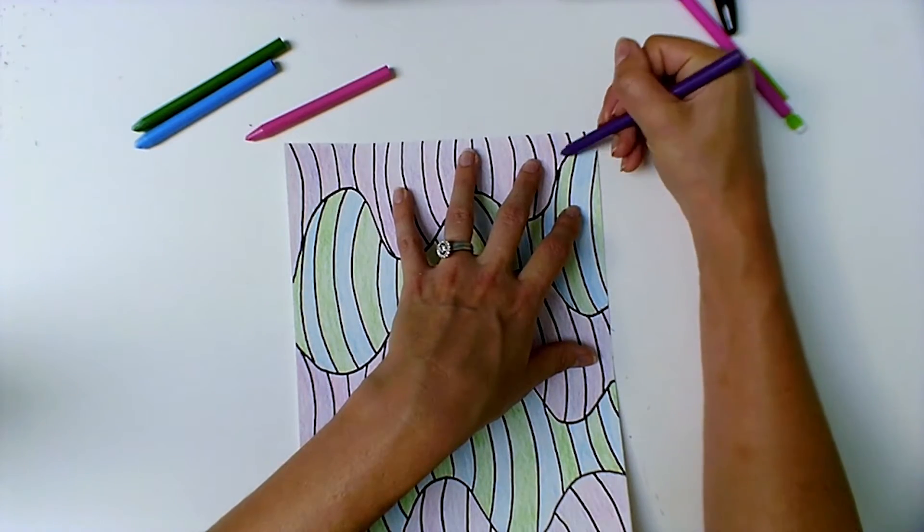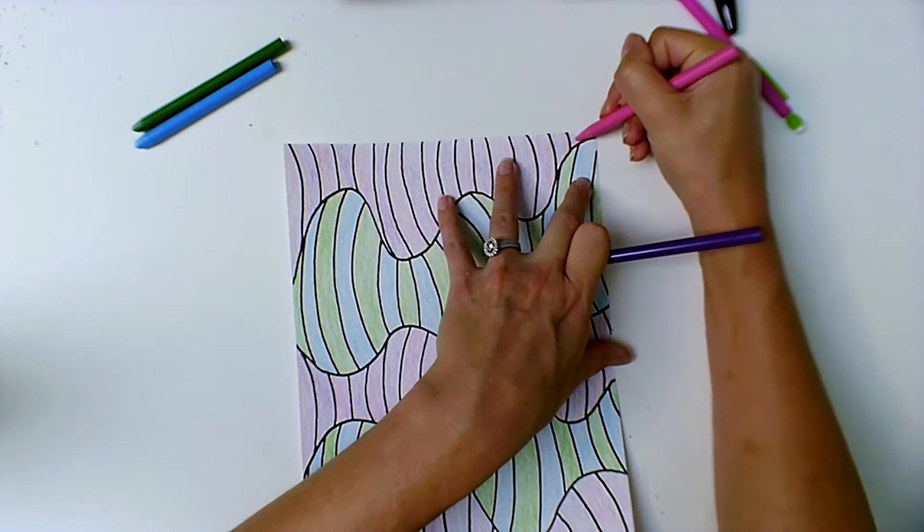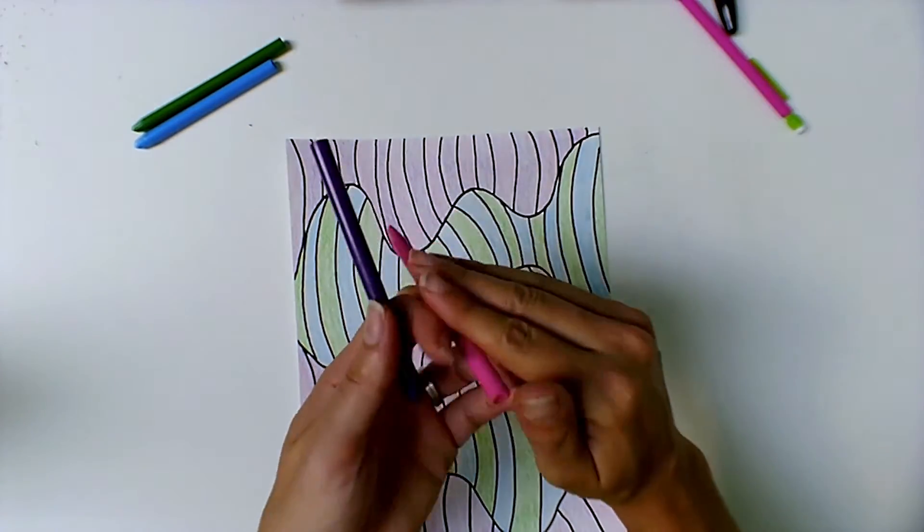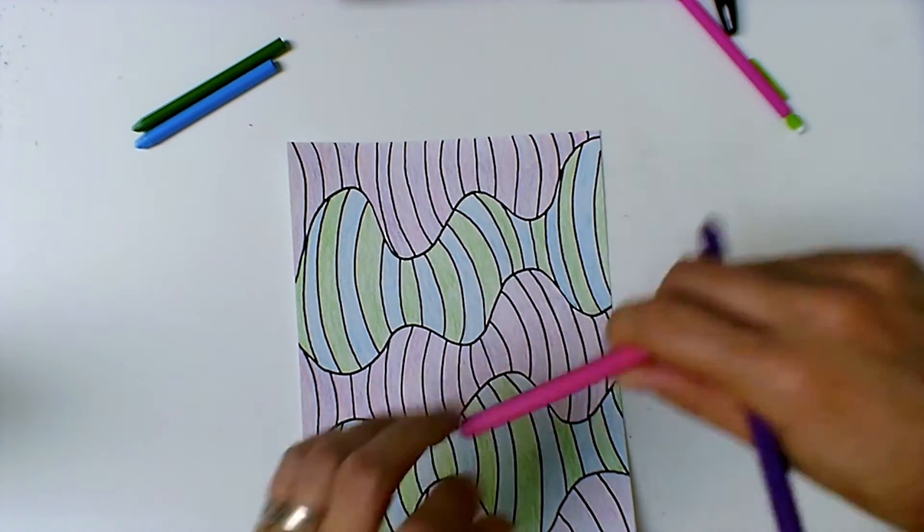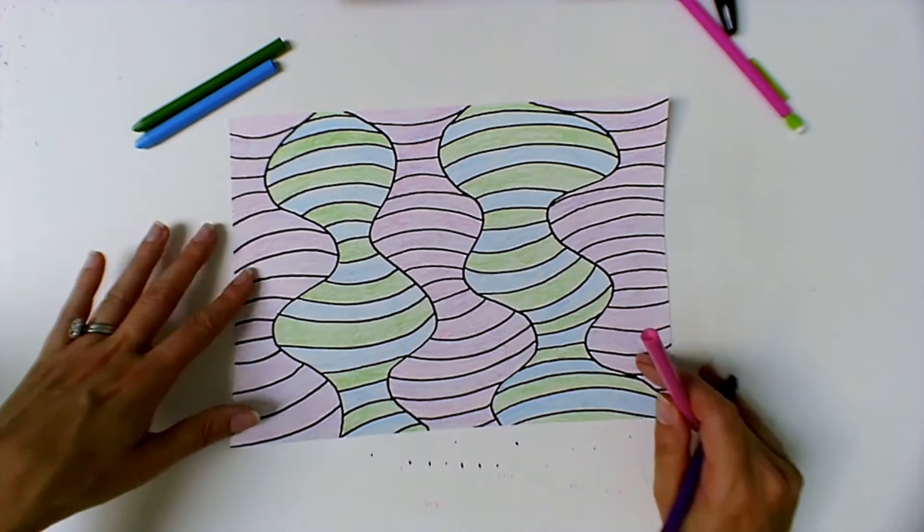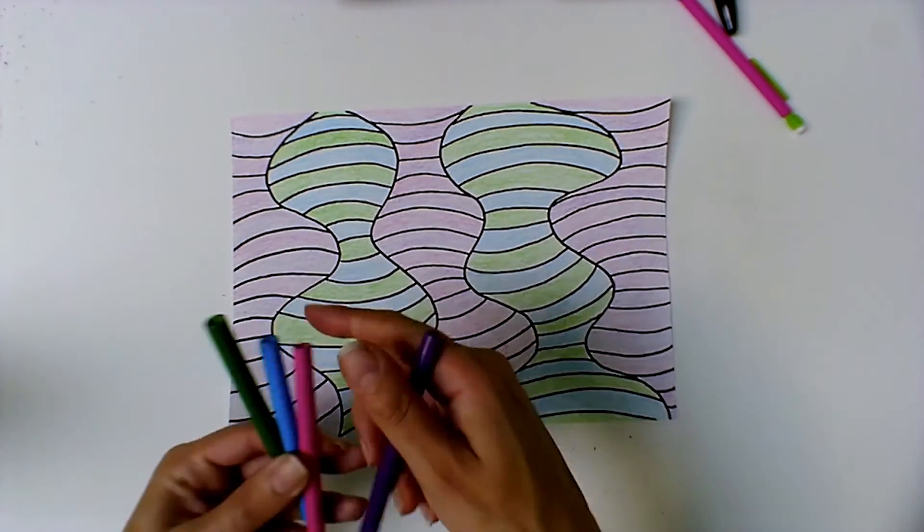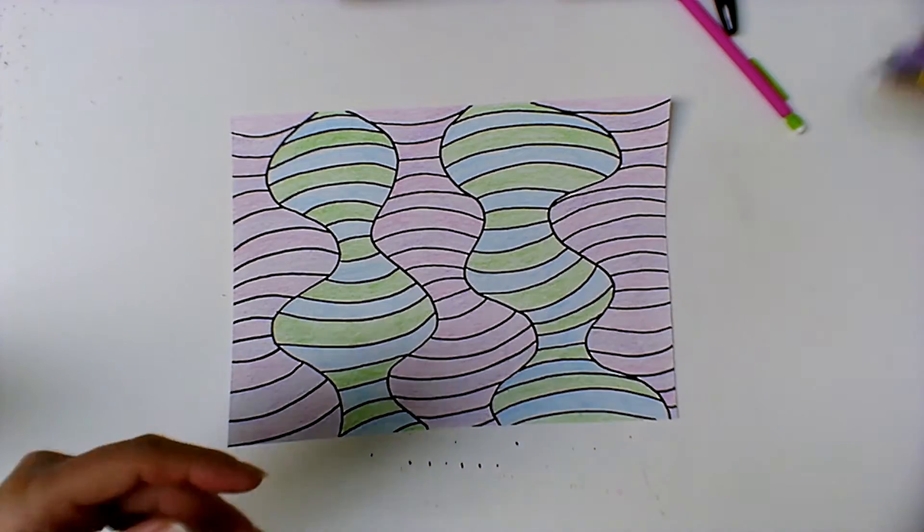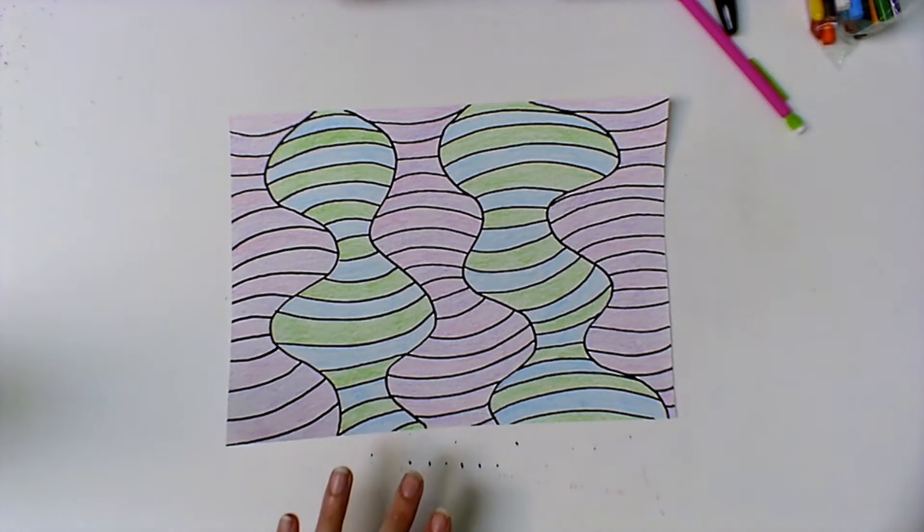Almost finished with the color sticks which are nice because they let you fill in a bigger area with colored pencil. Once you get them all colored in with your pattern going across you're actually done with the color sticks and we're going to move on to regular colored pencils for the next step.